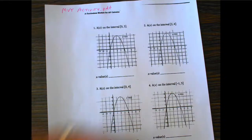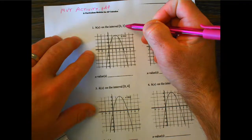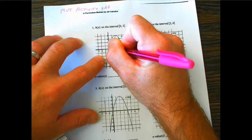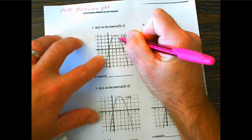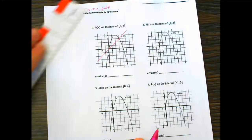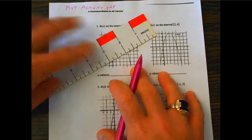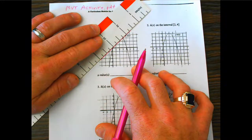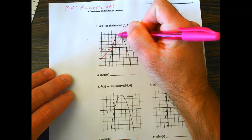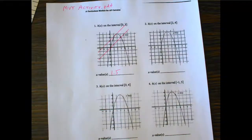Looking at h of x from zero to three, I'll do this first one for you — pause the screen and come back. From zero to three means the x-value of zero and x-value of three. Connect those two points, and that is the secant we're talking about. Moving my ruler up, I can find a tangent parallel to it, and it looks like that value is about 1.5.